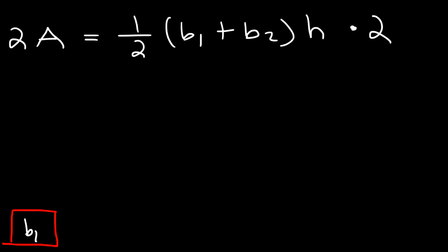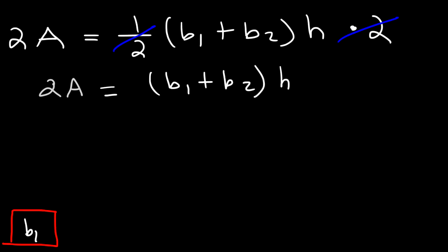Whatever I do to the right side I have to do to the left side. 1/2 times 2 is 1, so right now I have 2 times A, and that's equal to (B1 plus B2) times H. Now the next thing I need to get rid of is H. Notice that H is multiplied to (B1 plus B2).